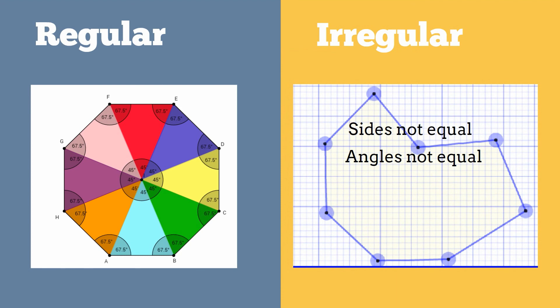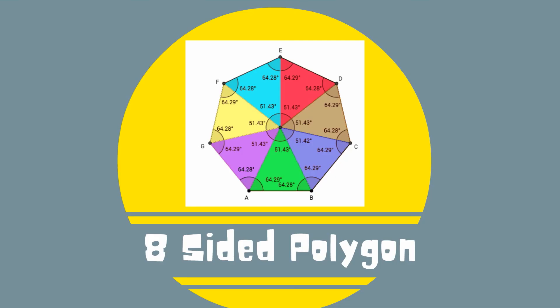Octagons can also be irregular which means they do not have equal sides or equal angles. So there we go, an 8 sided polygon, the octagon.